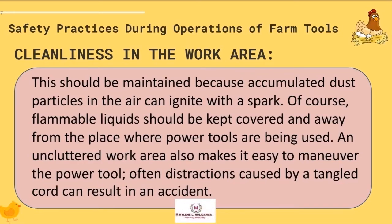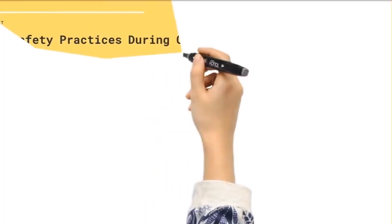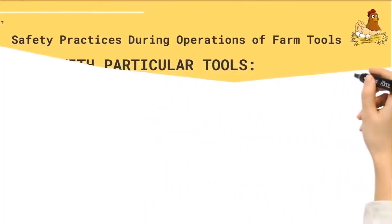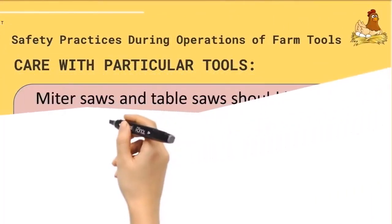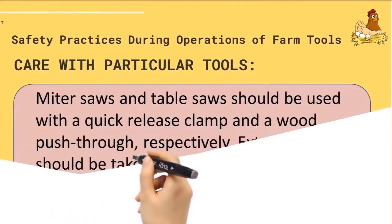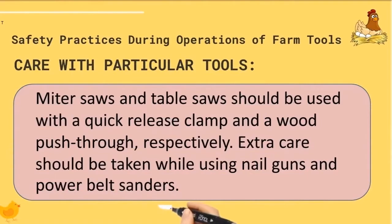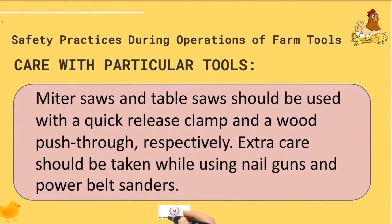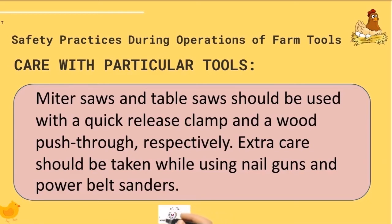Distractions caused by a tangled cord can result in an accident. Care with particular tools — miter saws and table saws should be used with a quick-release clamp and a wood push-through respectively. Extra care should be taken while using nail guns and power belt sanders.